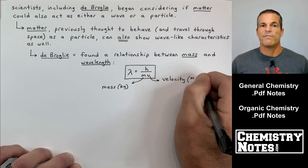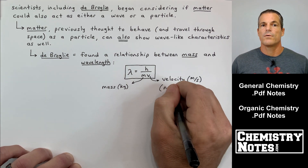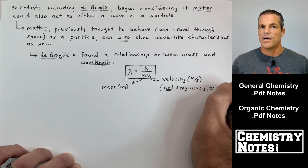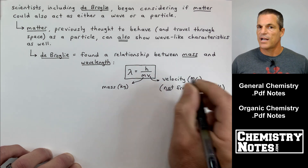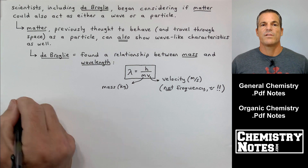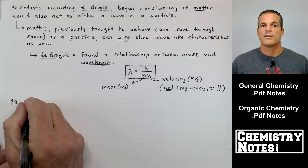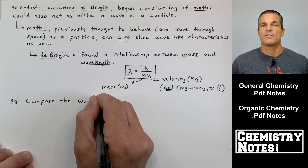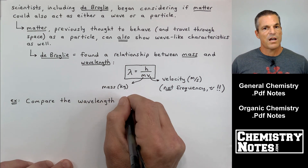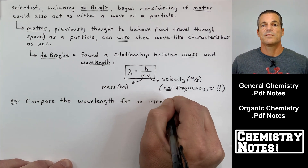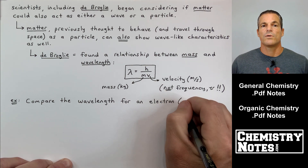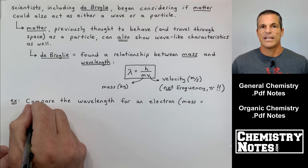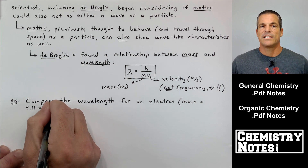De Broglie found a relationship between mass and wavelength. The de Broglie equation is: λ = h/mv, where v is velocity (not the cursive ν for frequency), m is mass in kilograms, and v is velocity in meters per second. This equation only applies to matter — it is not an equation for light, since light does not have mass.